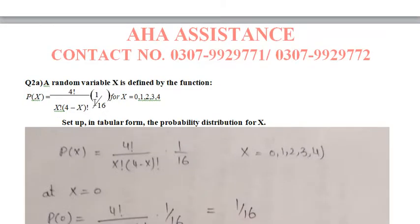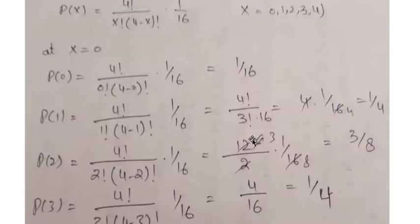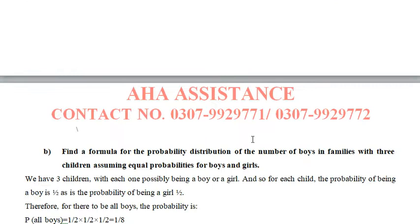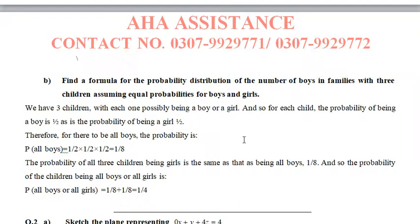In question number 2, a random variable x is defined by the function. You have to find out a function in a tabular form, you have to find out the probability distribution of the number of boys and families with three children assuming that equal probability for boys and girls. Here you have to explain the question.